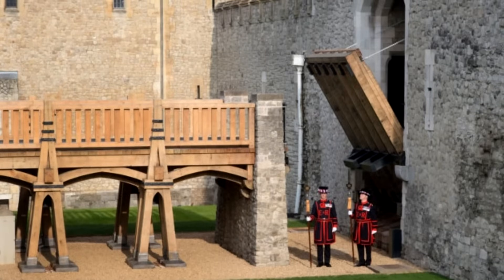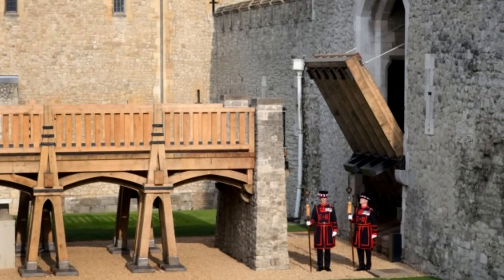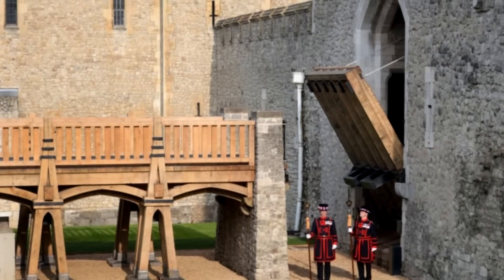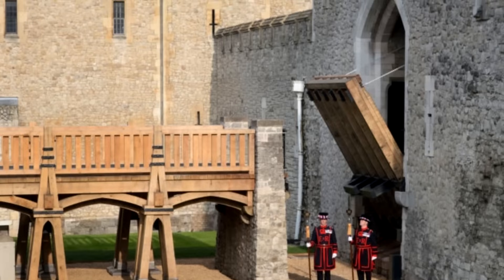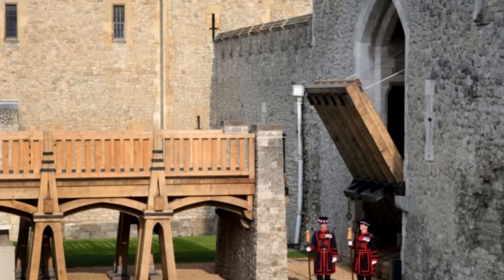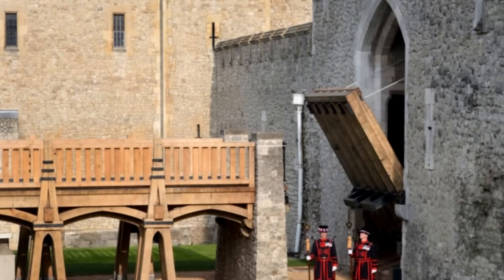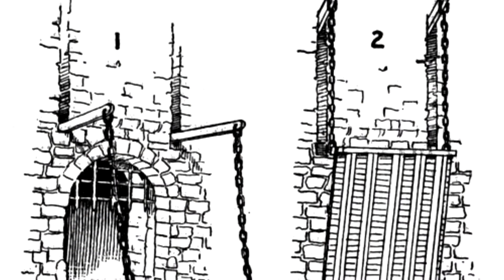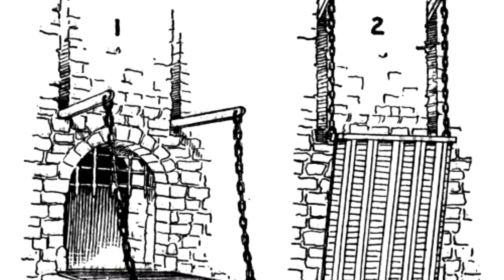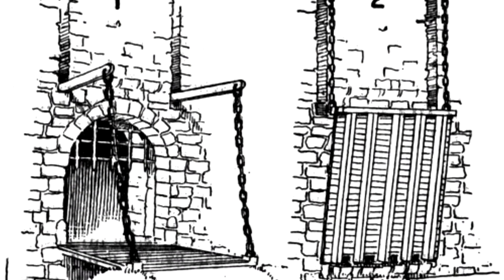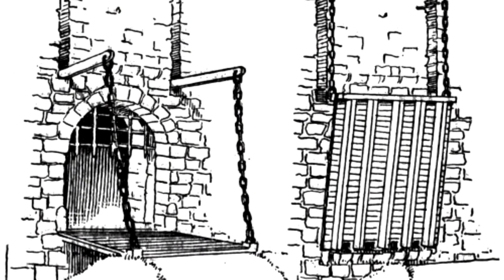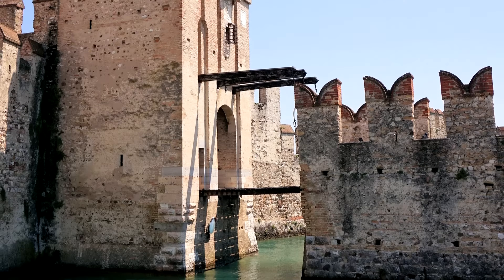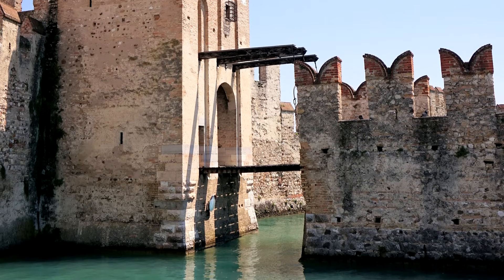Hello everyone and welcome back to Cobian History. Today we're going to have a look at another part of a castle for my anatomy of castles playlist, and we're having a look at the different drawbridge designs. A drawbridge is part of the gatehouse and can be raised or lowered to give access to the fortification by bridging a moat or a ditch.